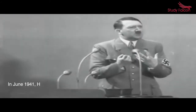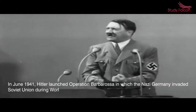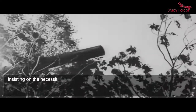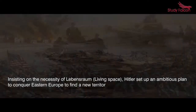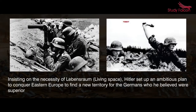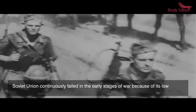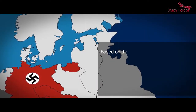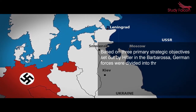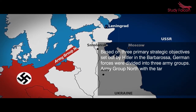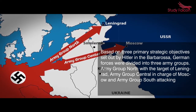In June 1941, Hitler launched Operation Barbarossa, in which Nazi Germany invaded the Soviet Union during World War II. Insisting on the necessity of Lebensraum, Hitler set up an ambitious plan to conquer Eastern Europe to find new territory for the Germans, who he believed were a superior Aryan race. Based on three primary strategic objectives set out by Hitler in Barbarossa, German forces were divided into three army groups: Army Group North targeting Leningrad, Army Group Centre in charge of Moscow, and Army Group South attacking Kiev and Ukraine.